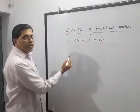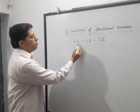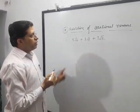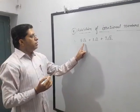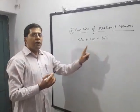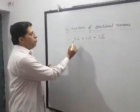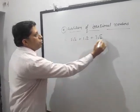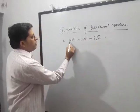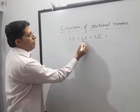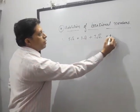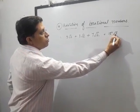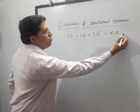Here our first question is 5 root 2 plus 3 root 2 plus 7 root 2. One thing we can see clearly, these all numbers are like numbers of root 2. See here 5 root 2. So what to do? You have to add directly: 5 plus 3 is 8, 8 plus 7 is 15, and root 2 is root 2. This is the answer of this.